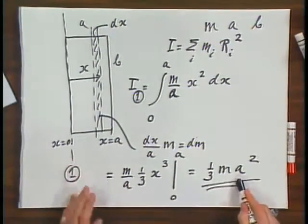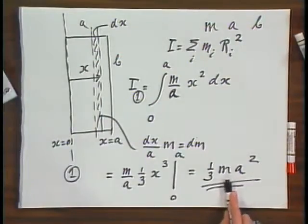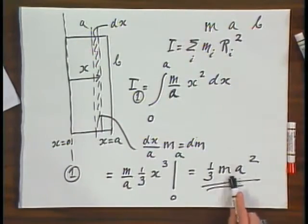And this result you can probably find in most tables. Most tables, not all, will give you the moment of inertia of this rectangular sheet if you rotate it about an axis that goes through one of the sides. So this is not something you want to remember, but it is something that you see you can derive.